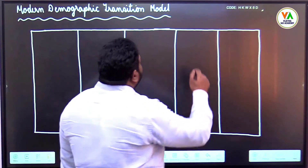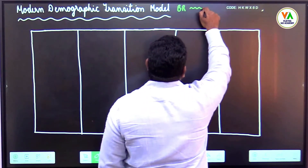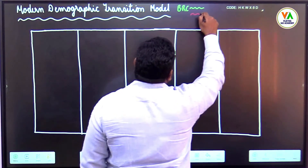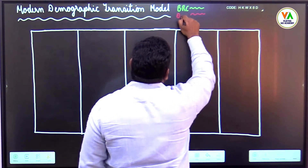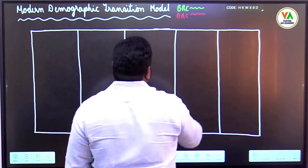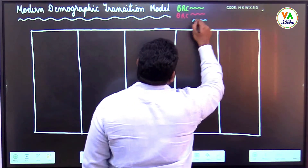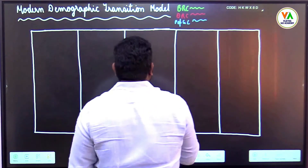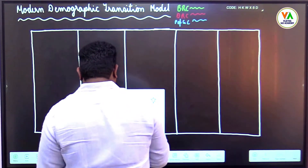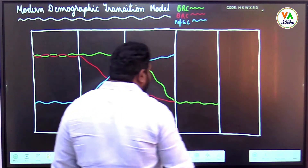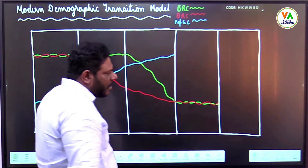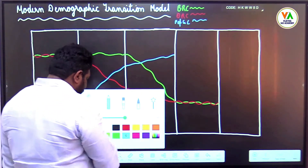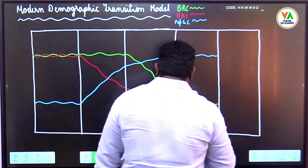Here we will take the green line as the birth rate curve, the red line as the death rate curve, and the blue line as the Population Growth Curve (PGC). Now, birth rate is constant at low and death rate also is constant at low, so population growth is again constant.